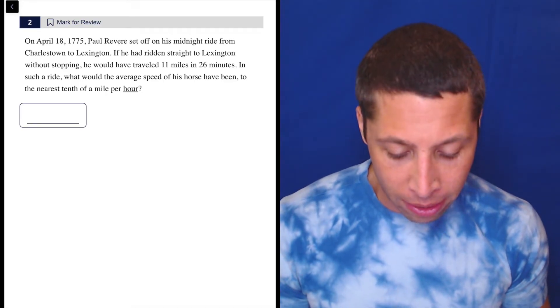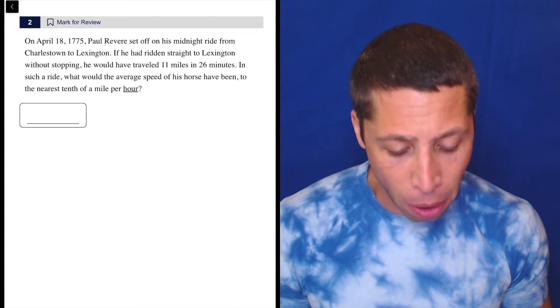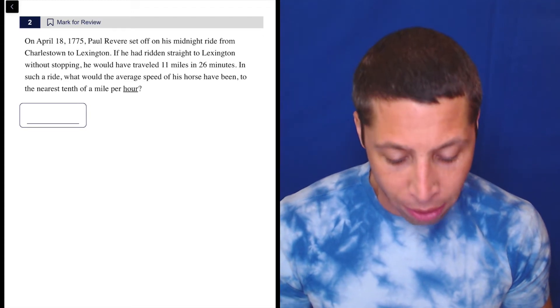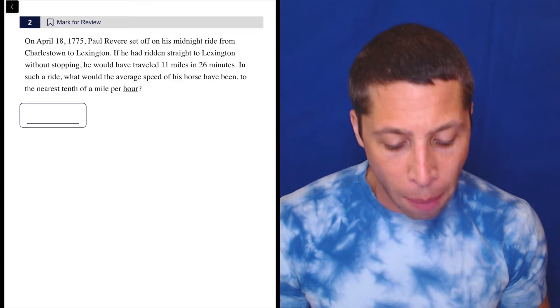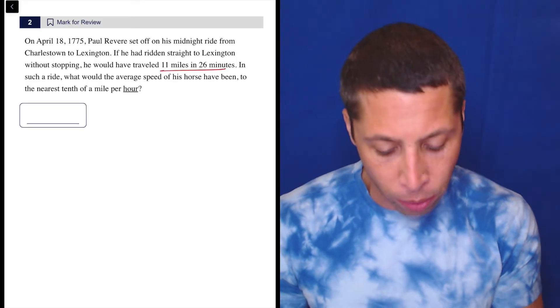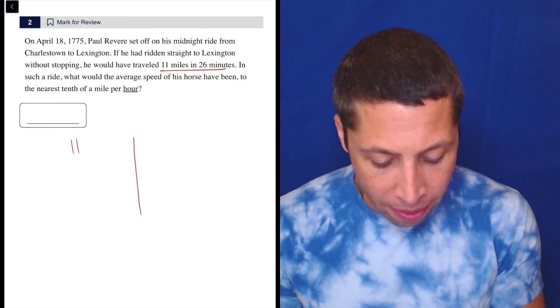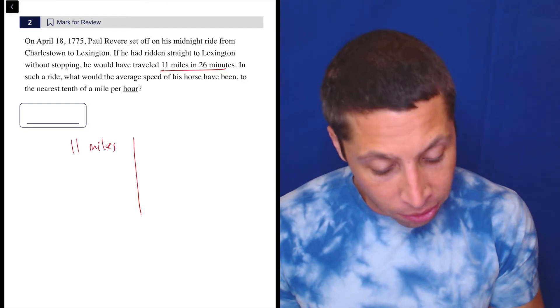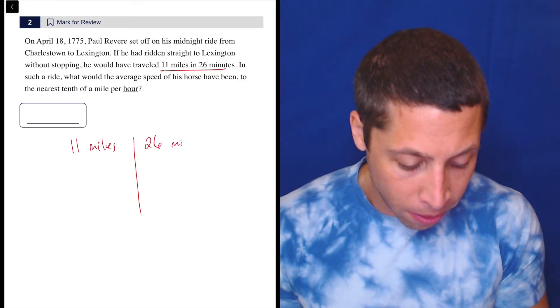On April 18th, 1775, Paul Revere set off on his midnight ride from Charlestown to Lexington. If he had ridden straight to Lexington without stopping, he would have traveled 11 miles in 26 minutes. Right there, that sounds like a rate. Let's draw our table, and then we have 11 miles in 26 minutes.